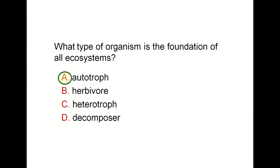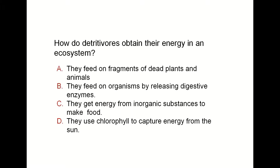Next: how do detritivores obtain their energy in an ecosystem? Detritivores are a kind of heterotroph — other feeders that depend on others to obtain their food. The food they get is fragments — very small remains of food left after decomposers decay dead bodies. So the keyword here is fragments; when we see detritivores, we choose fragments.